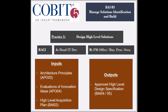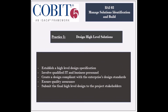The first practice is to design high-level solutions. The entities that are responsible for this practice are the business process owners and the project management office. The entity that is held accountable is the head of IT development. The practice receives several inputs that include the architecture principles from the AP03 process, the evaluation of innovation ideas from the AP04 process, and the high-level development and acquisition plan from the BAI2 process. It generates one output, which is the approved high-level design specification to be used by the BAI4 and 5 processes. The activities involved include establishing a high-level design specification that shows how the solution affects the business processes, the services, and the infrastructure.